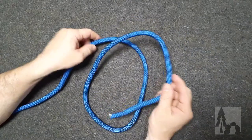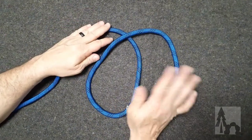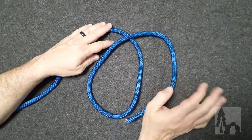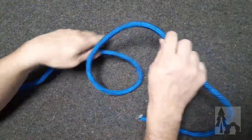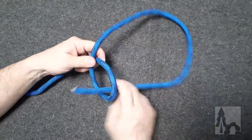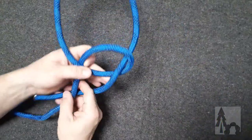Alright, so the most common loop that we're going to use in most of your field craft by far is going to be the bowline. So here's how you tie the bowline. I'll show you first what the bowline looks like and then we'll come back and tie it.